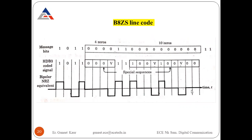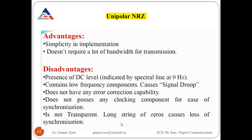Now we will discuss and summarize the advantages and disadvantages of all line codes. For unipolar NRZ — where NRZ stands for Non-Return to Zero and only one voltage level (plus A) is used for one, and zero for zero — the advantages are: simplicity in implementation, and it does not require a lot of bandwidth for transmission.